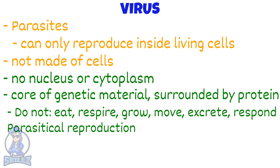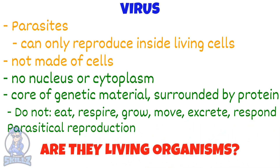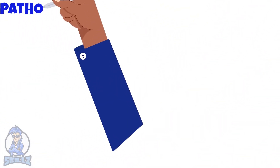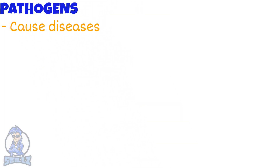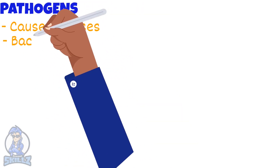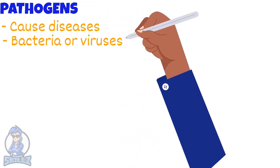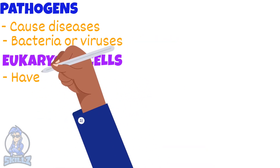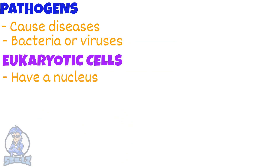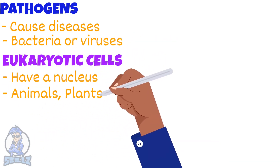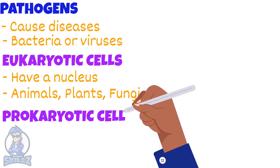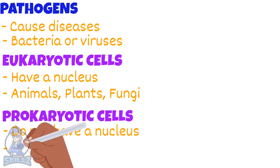This leads us to think that viruses are not living organisms at all. Pathogens are organisms that cause diseases. Most of them are bacteria or viruses. Eukaryotic cells have a nucleus — these are animals, plants and fungi. Prokaryotic cells do not have a nucleus, including bacteria.